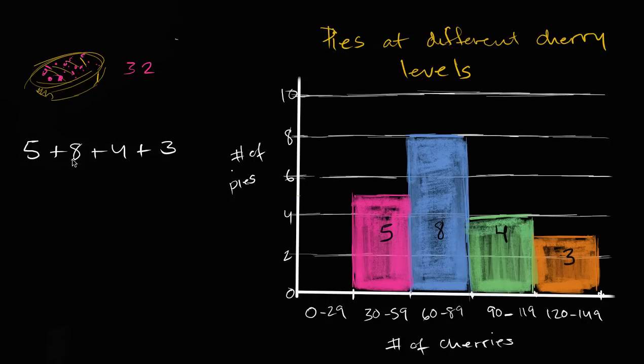which is what? Five plus eight is 13, plus four is 17, plus three is 20. So there are 20 pies in this store.